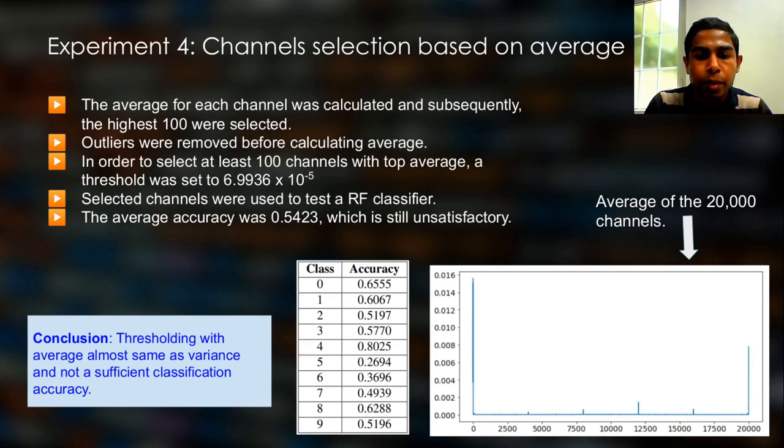In the fourth experiment, we do the same, but this time with average instead of variance. So, we calculate the average value of each frequency channel. The assumption is that the channels with high average values have useful information.